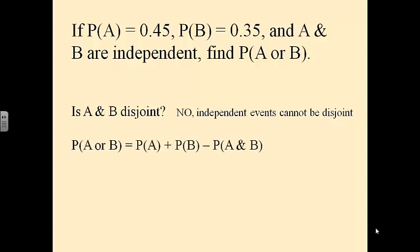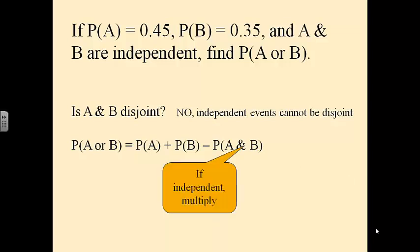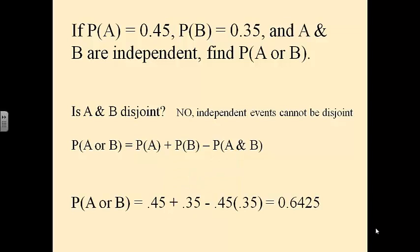Independent events are not disjoint, so we use the addition rule for non-disjoint events: probability of A or B. To find that, we need the probability of A and B. Since they're independent, we simply multiply A times B. Then we use the addition rule and get our answer.